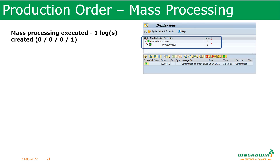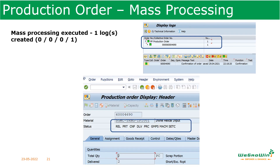Once executed, we can see the mass processing log and the system status is updated. For example, it will show printer, confirmation, and delivery completed status. Because we used the confirmation function, the system shows all the statuses. For each transaction, the system will keep updating the status in the processing log.